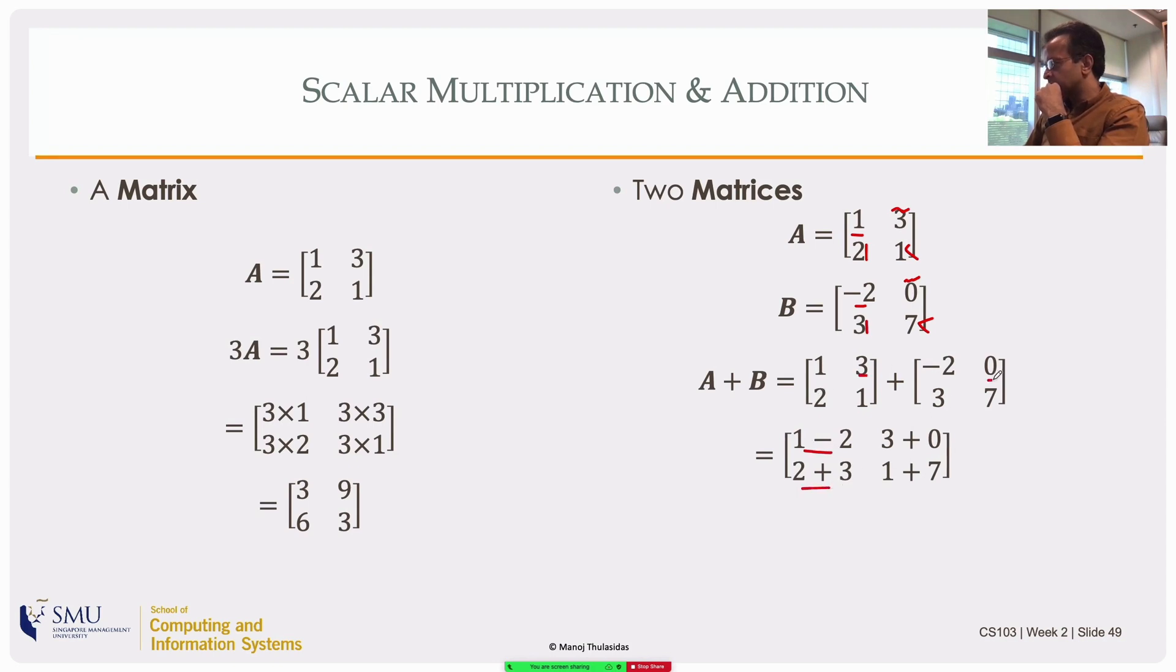As you can see, if you want to add two matrices they have to be of the same number of rows and columns. There's no other way. Nothing else can be added. Matrices will have to match in terms of their dimensions for them to add.